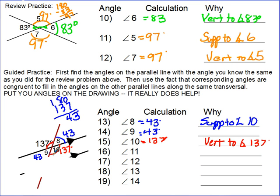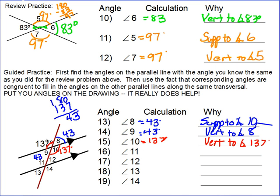Angle 8 is supplementary to angle 10, and angle 9 is vertical to angle 8. Now I'm going to use what I know about corresponding angles — corresponding angles are congruent. So this same pattern repeats around the next parallel line. Going down the transversal to the next parallel line, angle 11 corresponds to the 137-degree angle, so angle 11 is also 137 degrees. It's corresponding to that 137-degree angle.